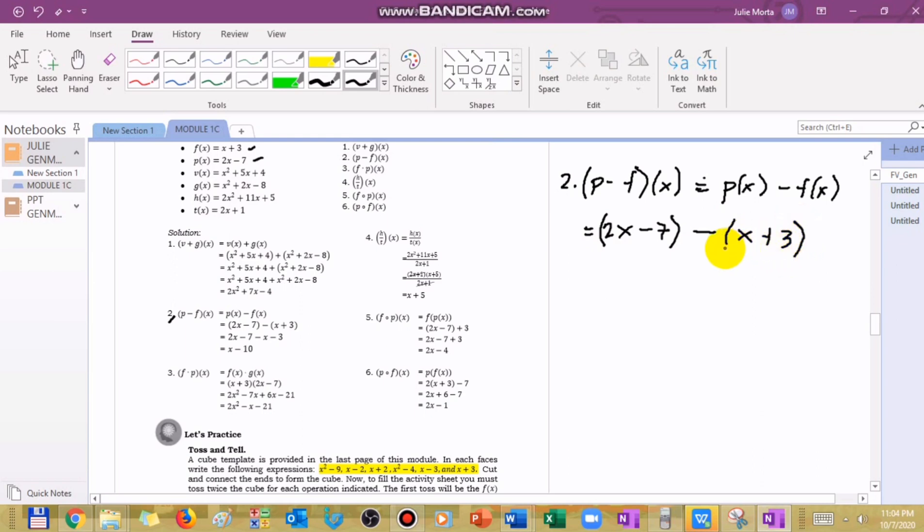When we're subtracting, the subtrahend changes sign because we distribute the negative. This becomes 2x minus 7. Negative times positive becomes negative x, negative times positive becomes negative 3. Or when you subtract, change all the signs of the second function, or get the opposite sign of your subtrahend. If positive, it becomes negative; if negative, it becomes positive. Combine like terms: 2x minus x becomes x, negative 7 minus 3 becomes negative 10. That's the answer to number 2.